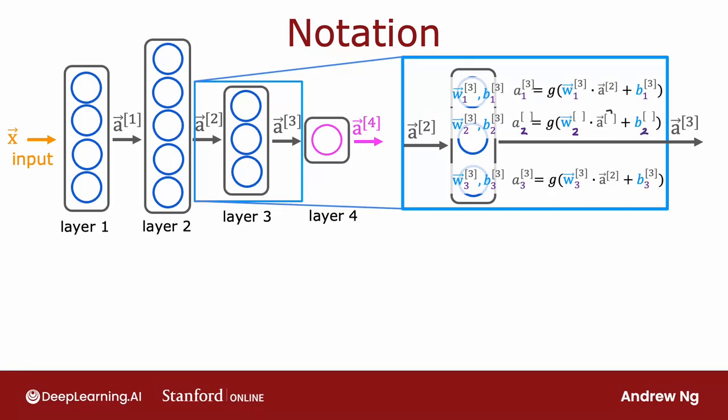So to recap, a three is activation associated with layer three for the second neuron, hence it's a two. There's a parameter associated with the third layer for the second neuron. This is a two, same as above, and then plus b three two. So hopefully that makes sense.